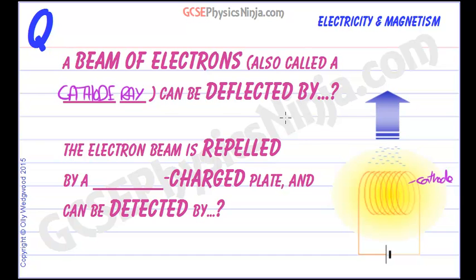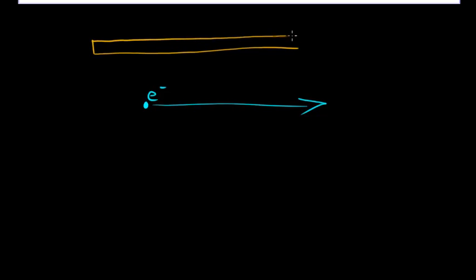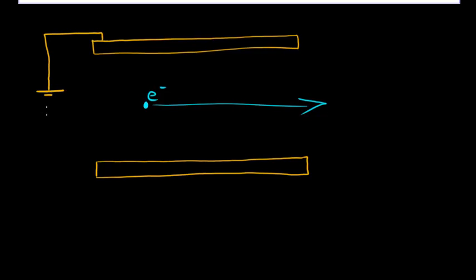This can be deflected by applying an electric field to the region where the electrons are traveling. So here's my electron, of course there would be millions and millions of them in the beam, and I'm going to apply an electric field by putting a plate above and below the path of the electron. The top plate, let's say we're going to connect that to the positive of a power supply, so that's positive, and the bottom plate will connect to the negative.